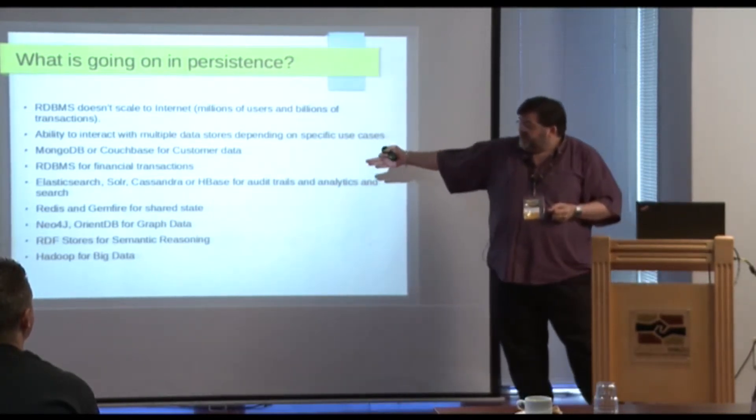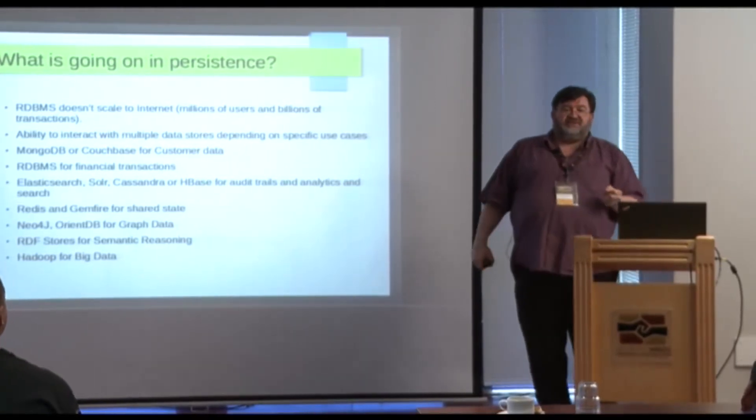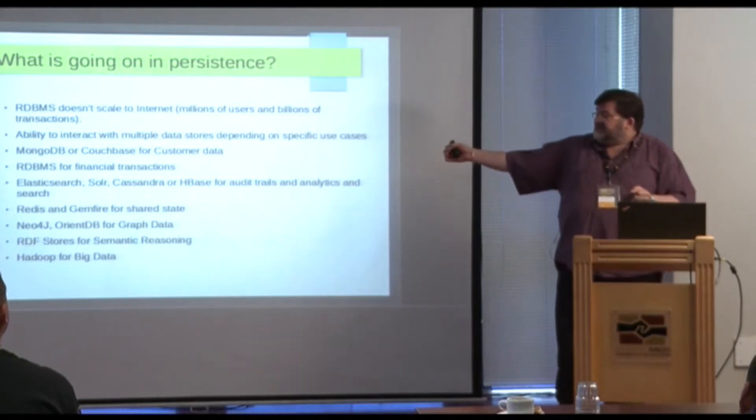They often combine graph databases and semantic databases, but there are databases specifically called RDF stores. RDF is the resource description framework used to classify and store semantic data. You basically store the data in what they call a triple — what's the type of data, what is the element in that type, and what is the value. They go in one big row, some are related and some are linked, and internally it builds a graph representation of this huge amount of semantic data. You then have a language to navigate the semantic data.